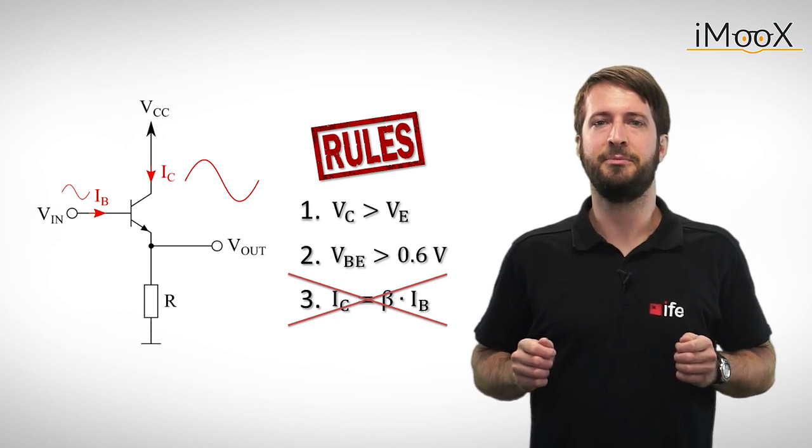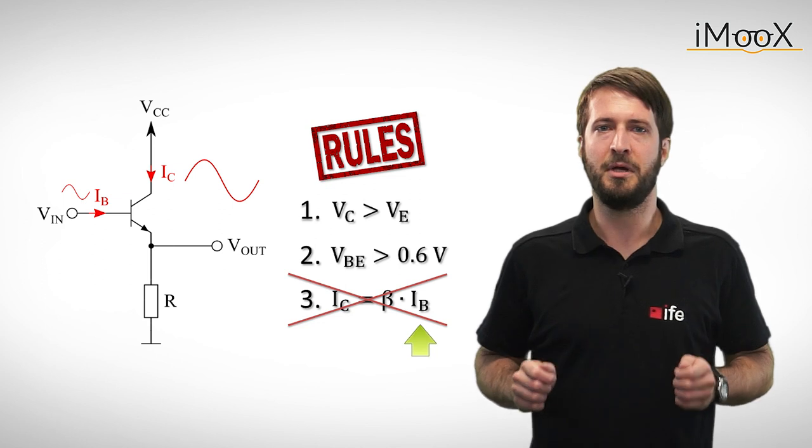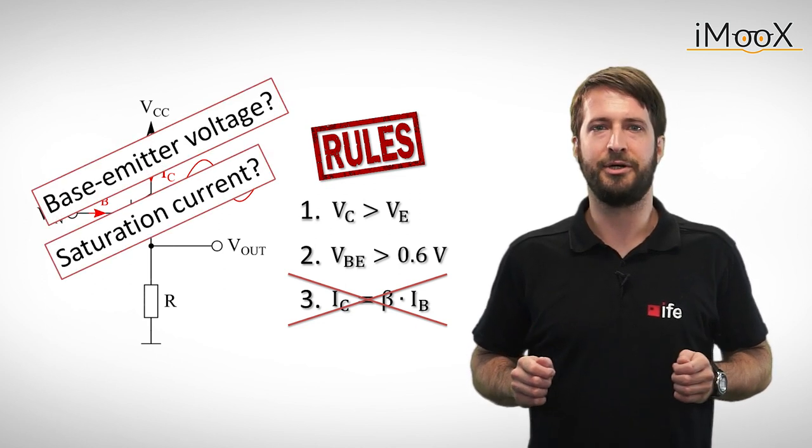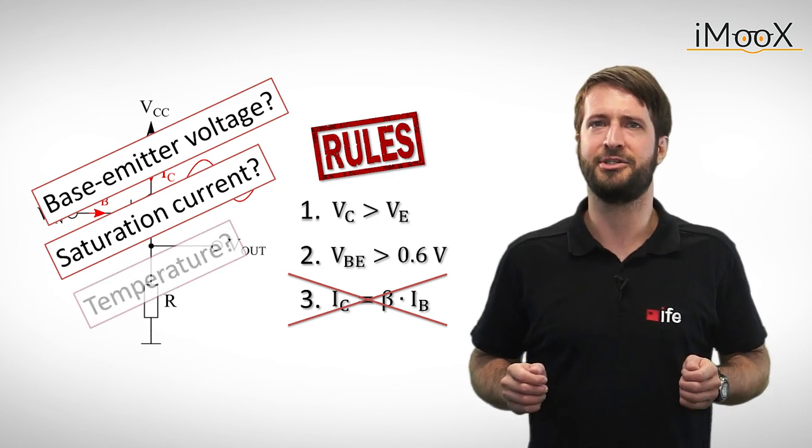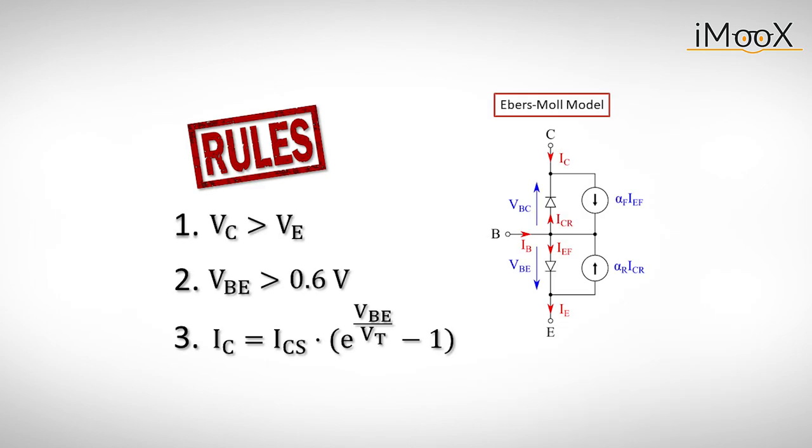As we now know, IC is not only dependent on beta and the base current IB, but also on the base emitter voltage, the saturation current and, to make things even worse, the temperature. Without going too much into detail, we get a new equation for our collector current, which is called the Ebers-Moll equation. It is derived from this more complex model of a bipolar transistor. If you want to know more about the Ebers-Moll model, you can find some links in the video description.